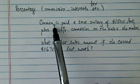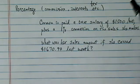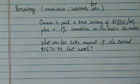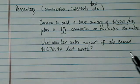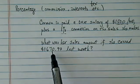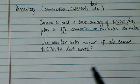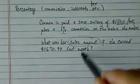We're given Carmen, a salesperson, had a base salary of $1,500 per month plus 1% commission on whatever she sells. Last month she earned $1,670.97, and we're asked how much did she sell.